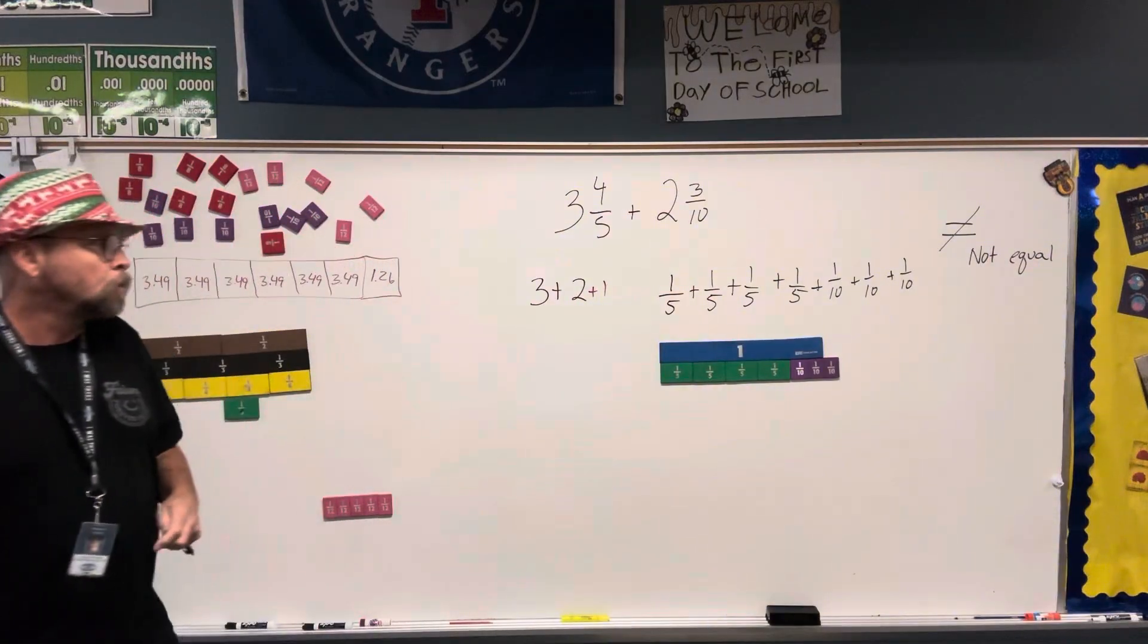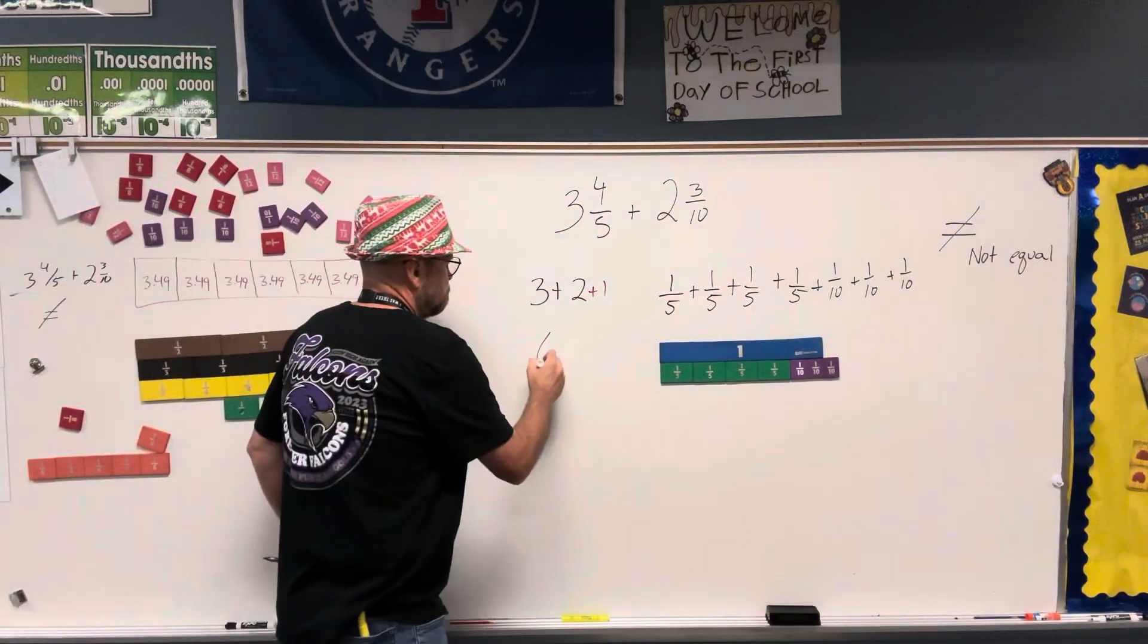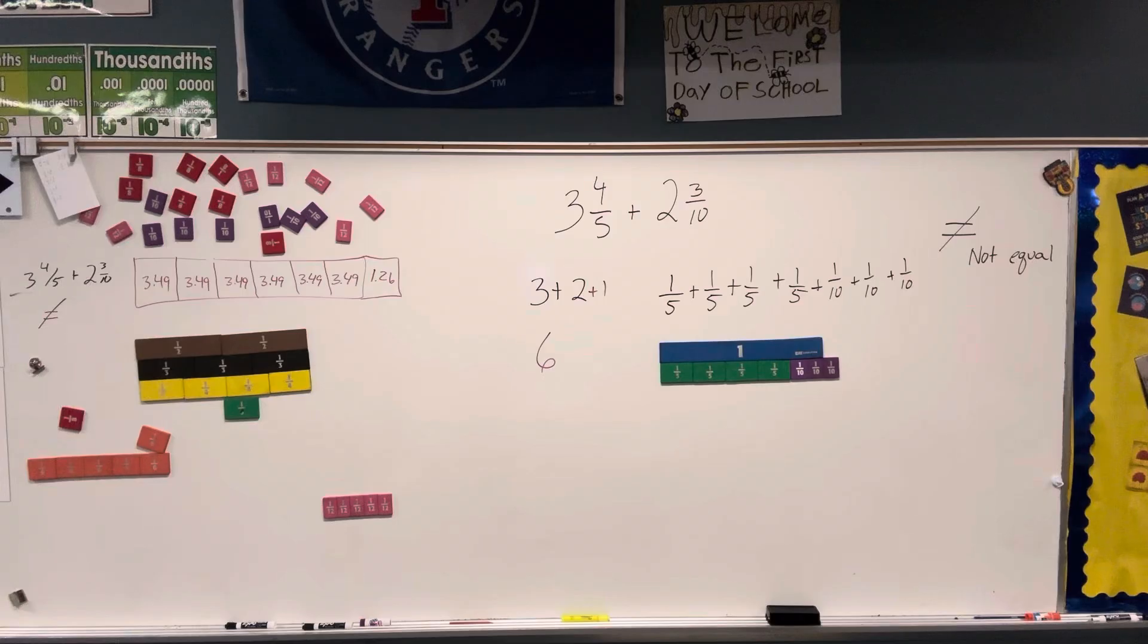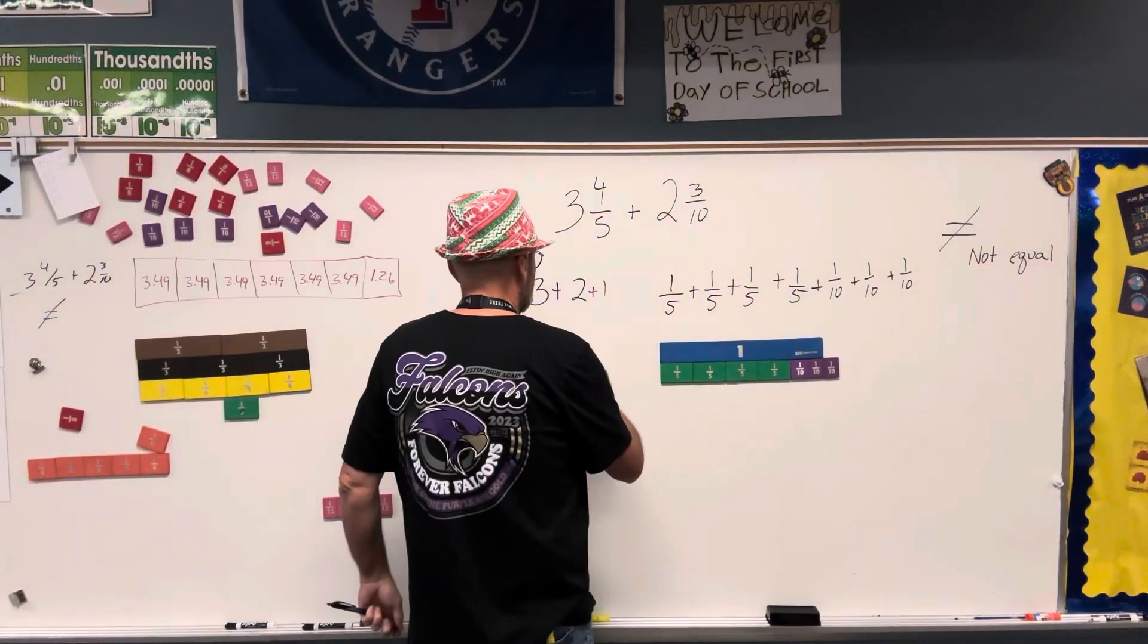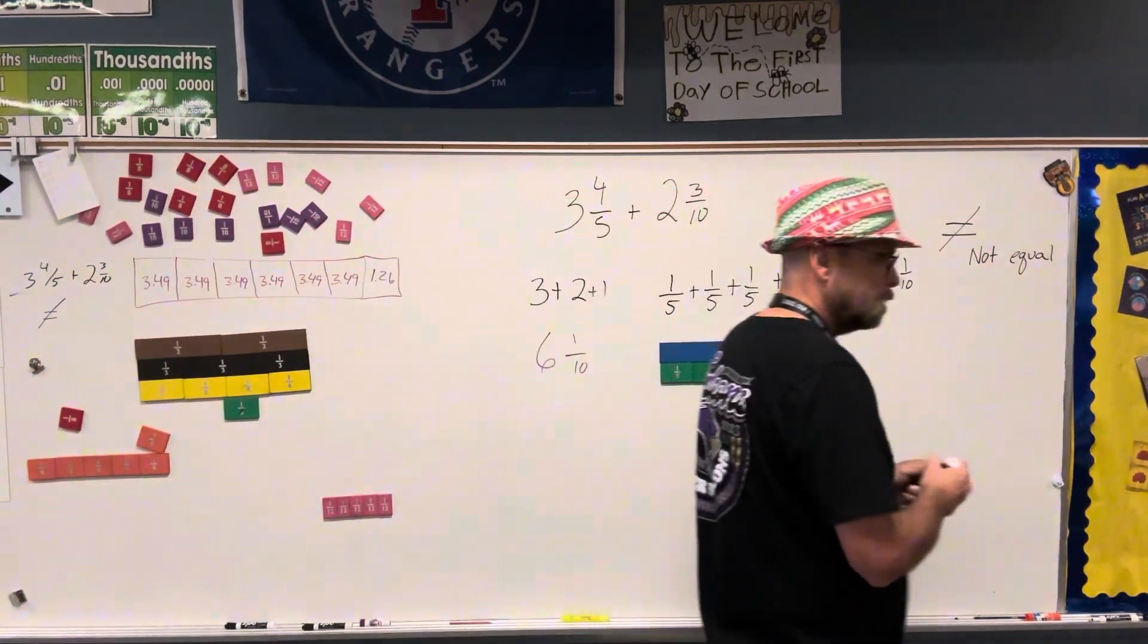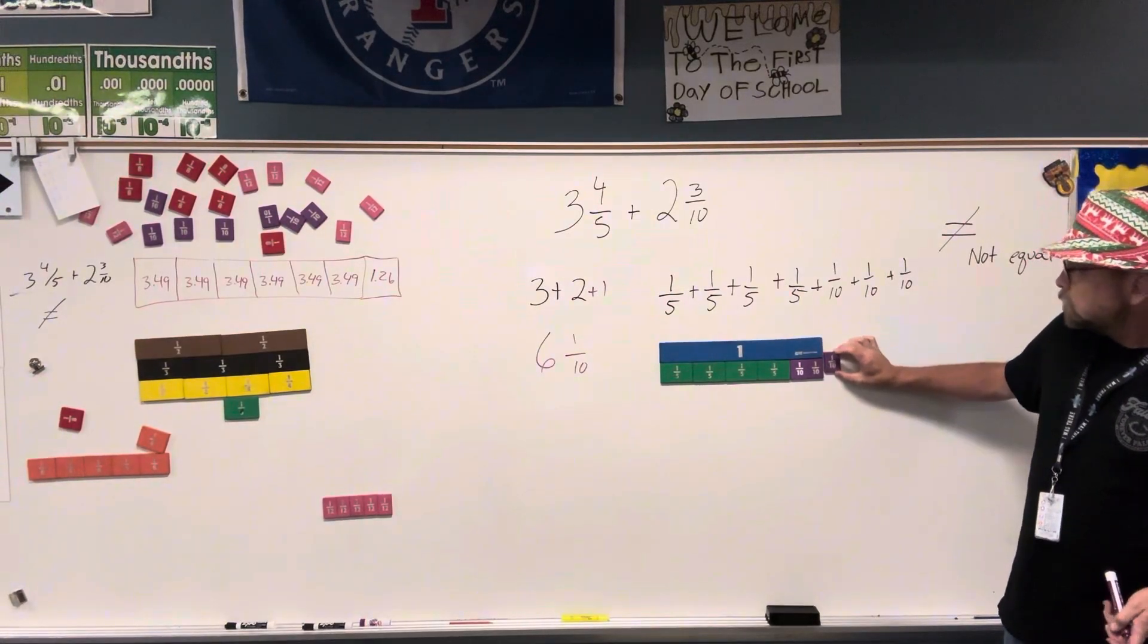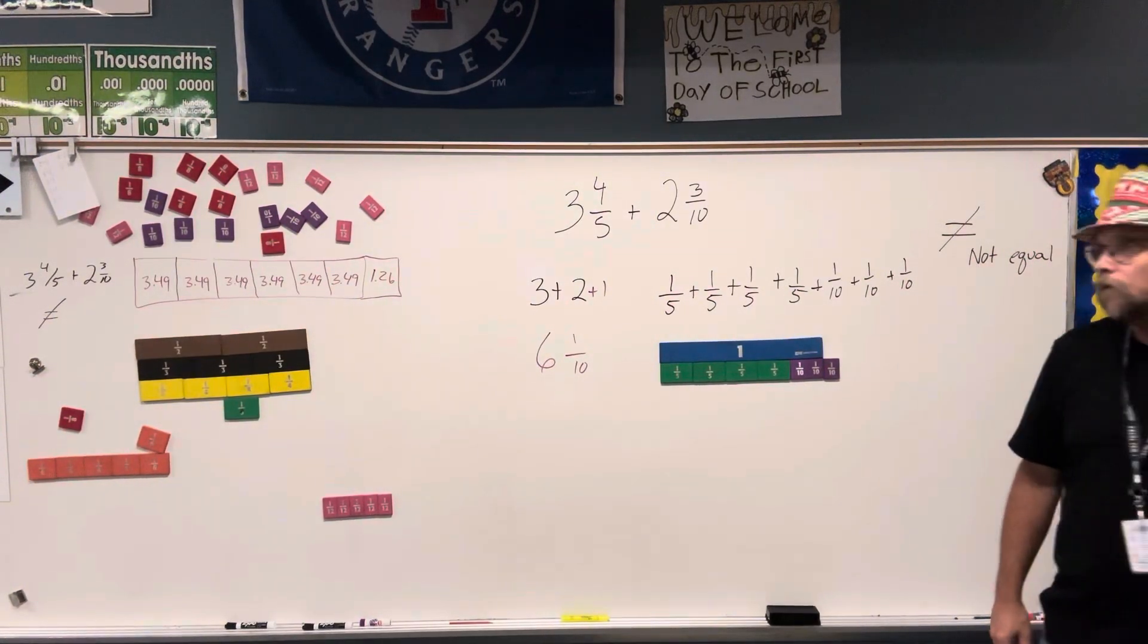So now I know I'm going to have to add another 1. So I have 3 plus 2 plus 1, so that equals 6. My whole number is 6. How much greater than 1 is 4 fifths plus 3 tenths? 1 tenth. 1 tenth greater. So I have 6 and 1 tenth. Because that fits exactly 1 tenth. So it's 6 and 1 tenth for that problem.